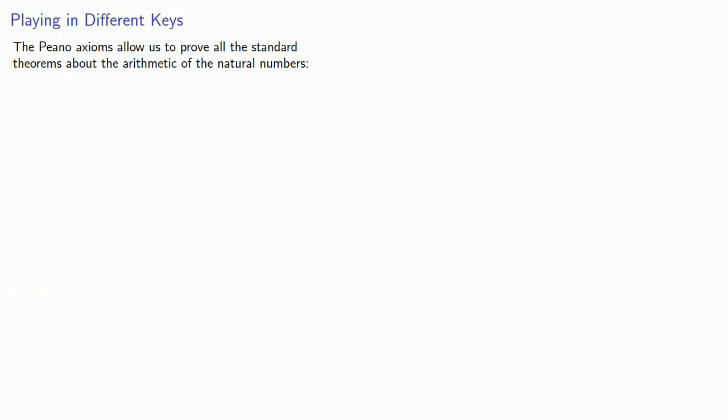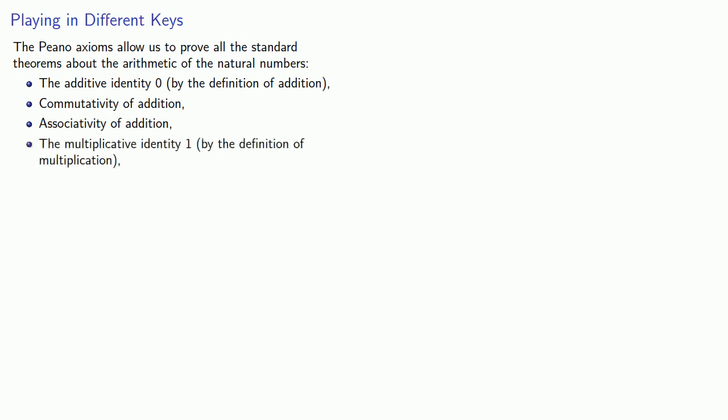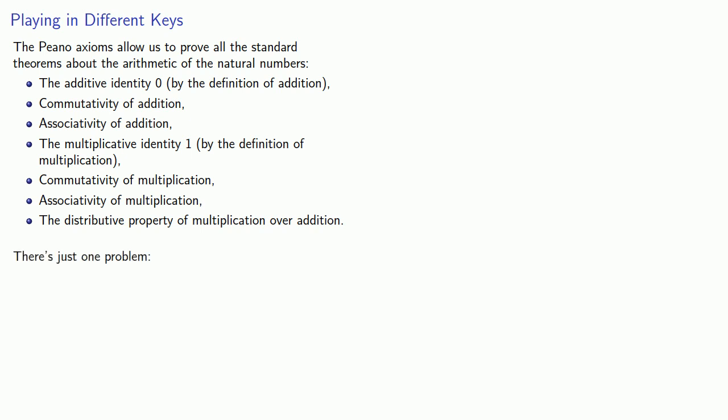Now the Peano axioms allow us to prove all the standard theorems about the arithmetic of the natural numbers. The additive identity 0, by the definition of addition. Commutativity and associativity of addition. The multiplicative identity 1, by the definition of multiplication. Commutativity and associativity of multiplication. And the distributive property of multiplication over addition.